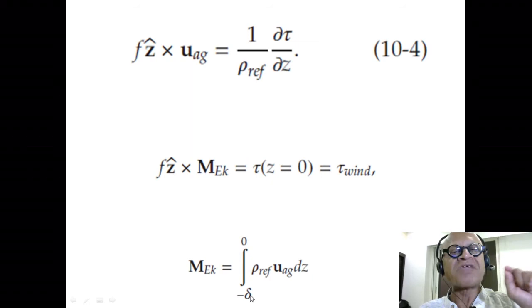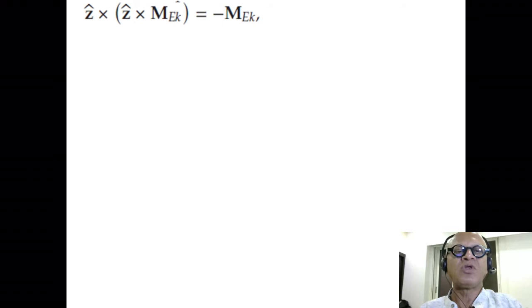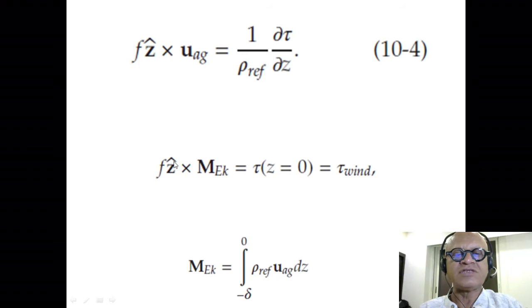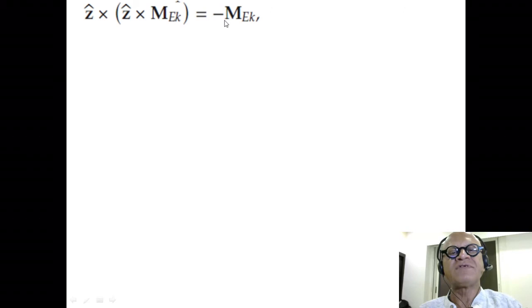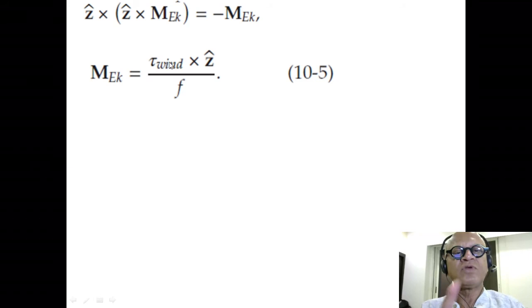This is called the momentum penetration depth—the wind momentum is going into the ocean. If you cross the left side with ẑ, then ẑ × (ẑ × M_Ek) gives minus M_Ek. Taking the negative sign out by doing τ_wind × ẑ instead, Ekman transport simply becomes τ_wind × ẑ divided by f. Whatever delta is, we can estimate Ekman transport by simply knowing the wind stress and Coriolis at that latitude—how great is that!